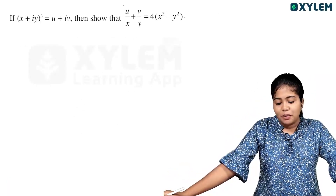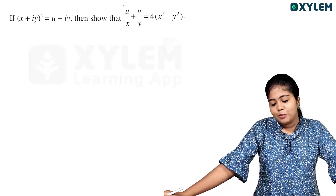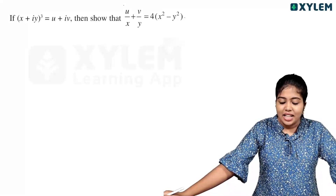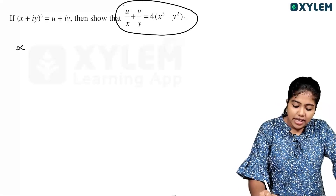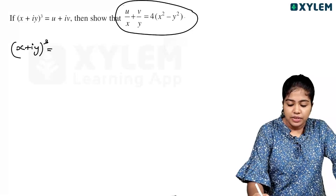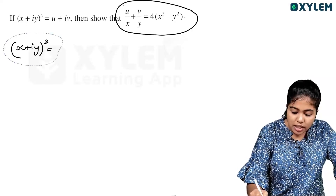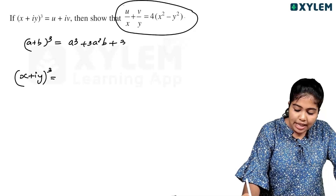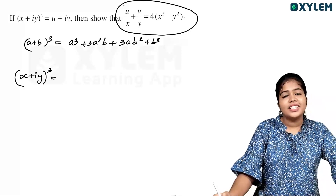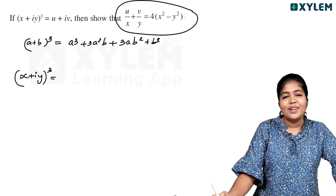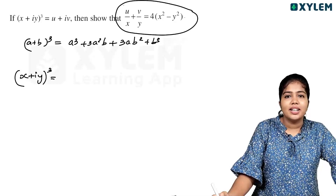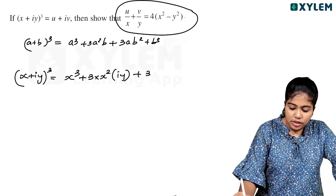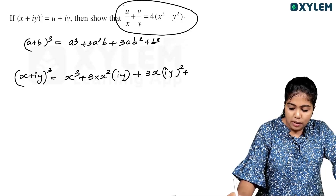If (x plus iy) all cube equals u plus iv, then show that u by x plus v by y equals 4 into (x squared minus y squared). Using the formula (a plus b) all cube equals a cubed plus 3a squared b plus 3ab squared plus b cubed, where a equals x and b equals iy.